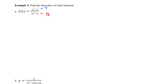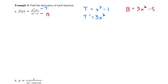If you need to, off to the side — especially when you're starting off — it can be helpful to say: t equals x cubed minus 1, t prime equals 3x squared, b equals 3x squared minus 5, and b prime equals 6x.